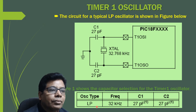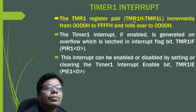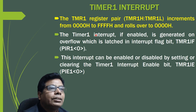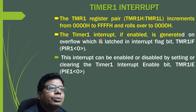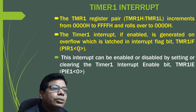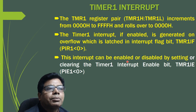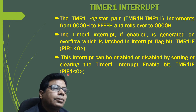The Timer 1 register pair TMR1H and TMR1L increments from 0x0000 to 0xFFFF and rolls over to 0x0000. When it rolls over, the Timer 1 interrupt — if enabled — is generated on the overflow, which is latched in the interrupt flag bit TMR1IF, bit 0 of PIR1. This interrupt can be enabled or disabled by setting or clearing the Timer 1 interrupt enable bit TMR1IE in bit 0 of PIE1.